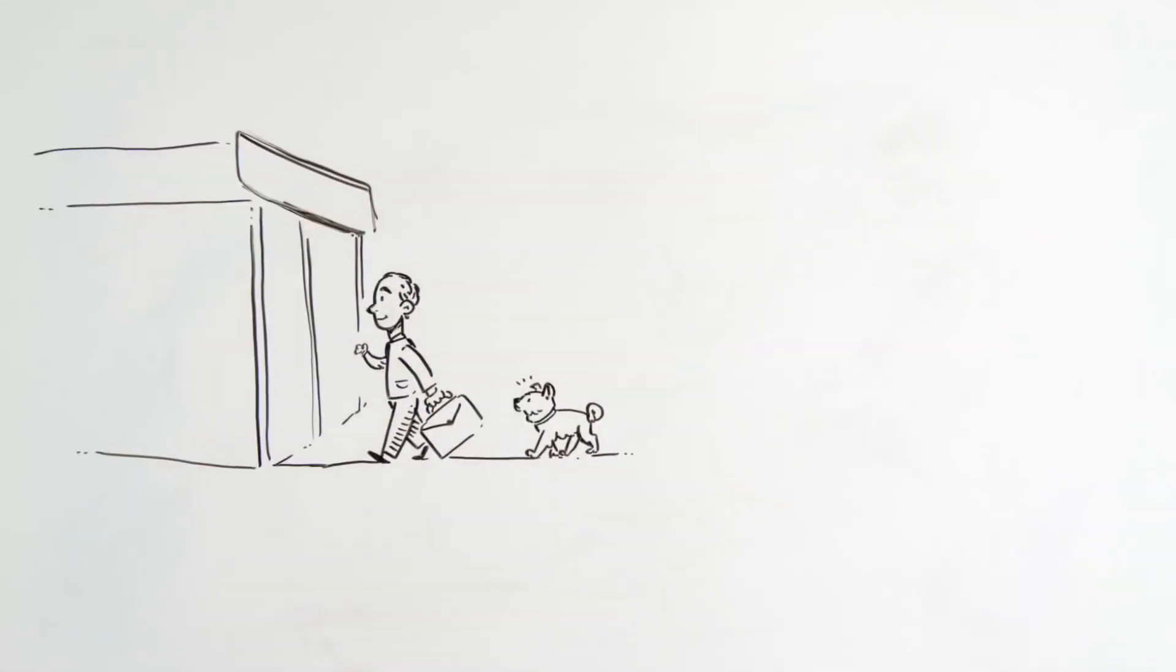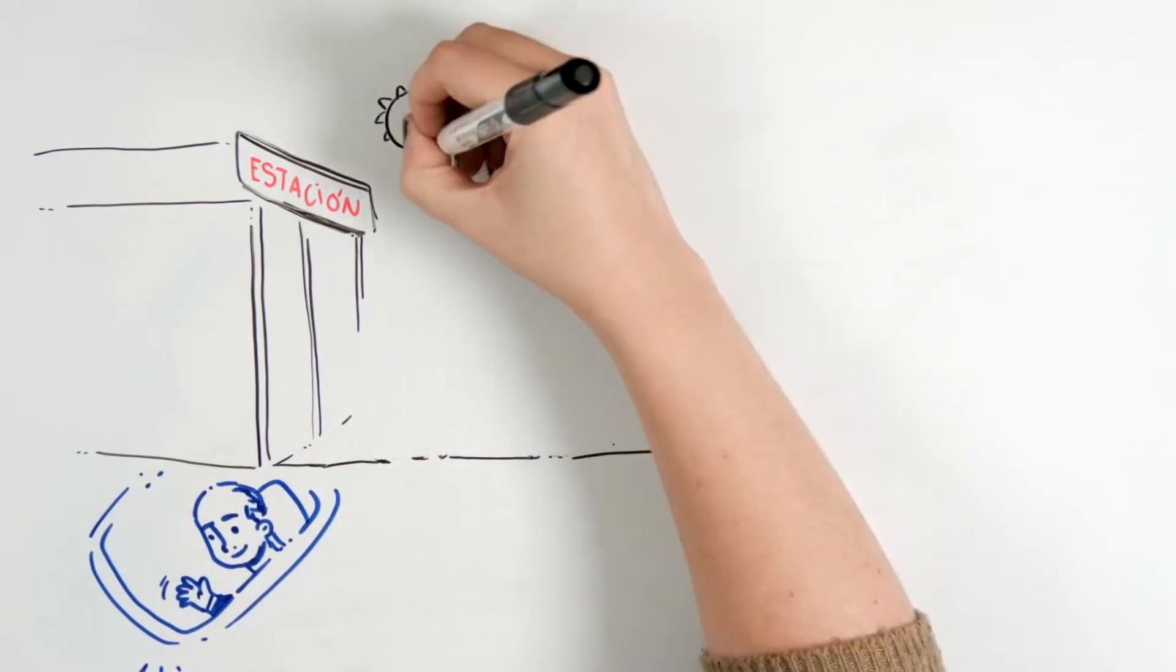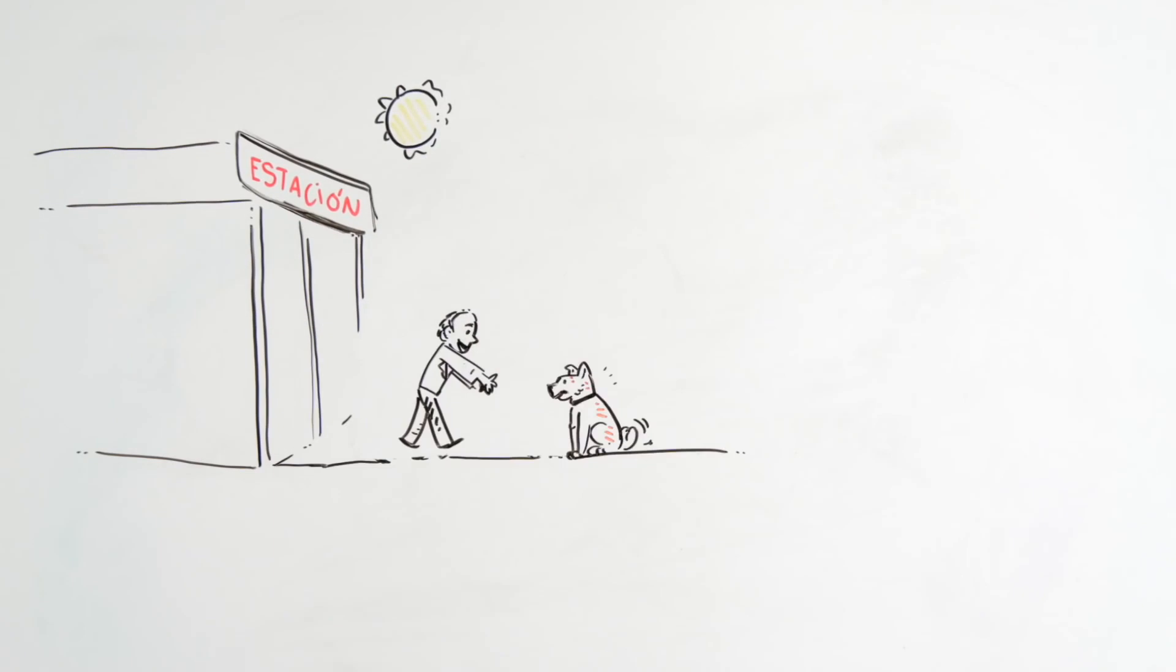The dog and its owner became good friends. Hachiko would accompany Hidesaburo every day to the station where he would take the train to go to work. And at the end of the day, Hachiko came back to greet his owner.